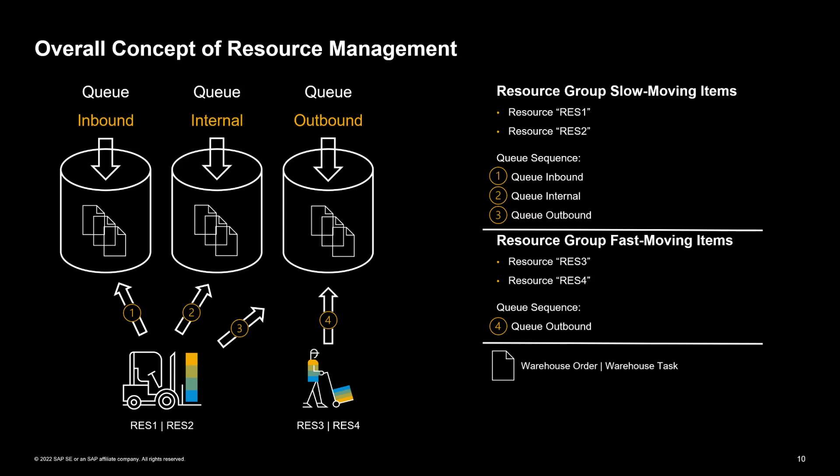We have two resource groups: one for slow moving items and one for fast moving items. The resource group slow moving items has been assigned to resources res1 and res2. The resource group fast moving items has been assigned to resources res3 and res4. With the queue determination, we can also define which queue is going to be processed first. And this is basically the overall concept of resource management.